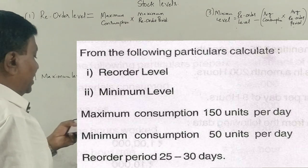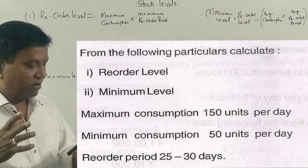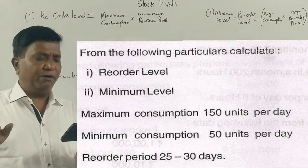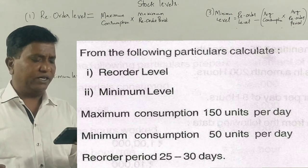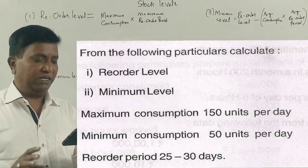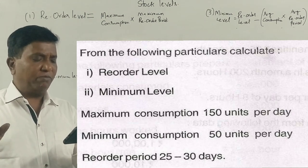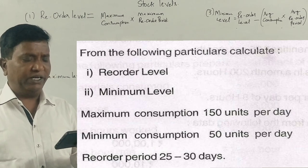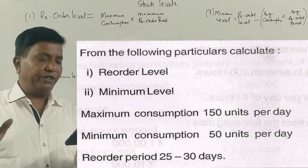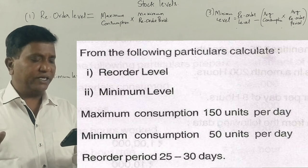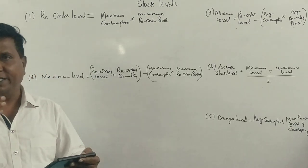Guys, 2015 June, six months, five months question there. From the following particulars calculate reorder level and minimum level. Maximum consumption is 150 units per day, minimum consumption 50 units per day, reorder period is 25 to 30 days.